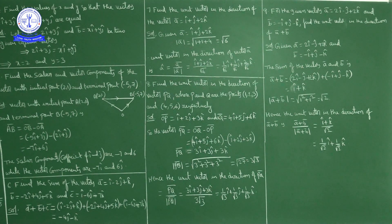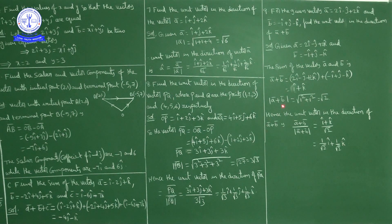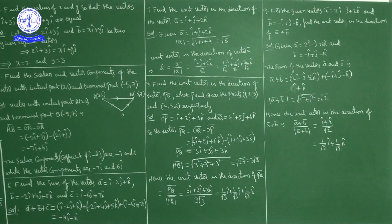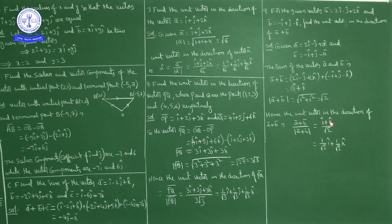Magnitude of (a̅ + b̅) = √(1² + 1²) = √2. Unit vector in the direction of a̅ + b̅ = (î + k̂)/√2 = (1/√2)î + (1/√2)k̂. We will conclude here and continue the remaining problems in the next class. Thank you.